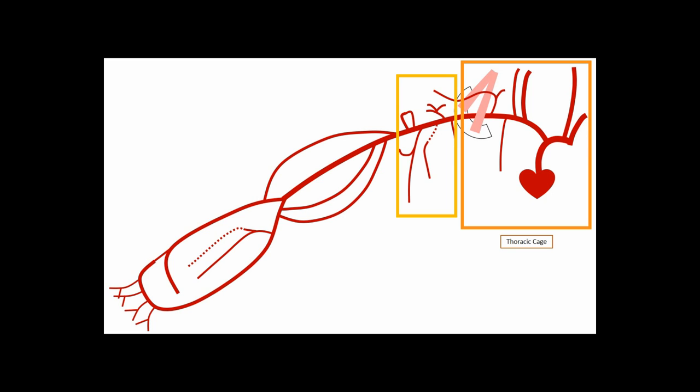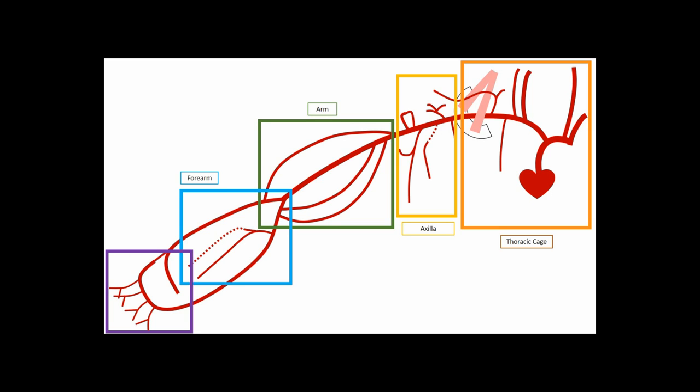Here is the schema which you can practice drawing on your own. These are all of the arteries we are going to be going through today. I have broken it up into pieces: the thoracic cage, the axilla (another word for the armpit), the arm, the forearm, and the hand. The arm is from your shoulder to your elbow, and the forearm is from your elbow to your wrist. I like to learn from the parent artery in each section.